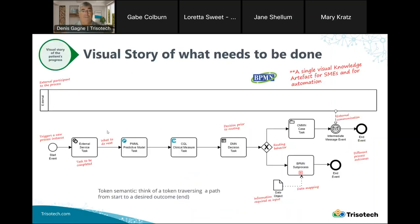Going back to one of the first points, it's a visual story about what needs to be done next — a single artifact built for both the subject matter expert and for automation. The pool represents some external participant. The start event, which is a circle, triggers the instance. The rounded rectangles are tasks to be completed. The marker here indicates this is a service task. The arrow shows us what to do next. This is a PMML or predictive model task — an AI kind of task.